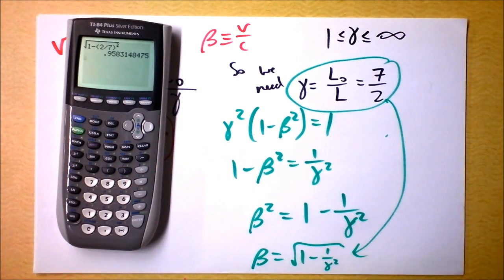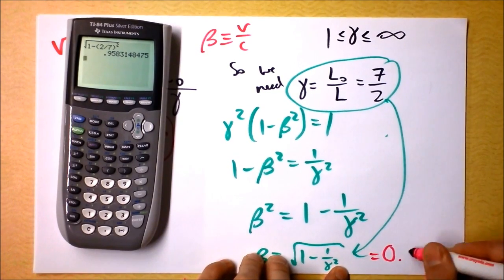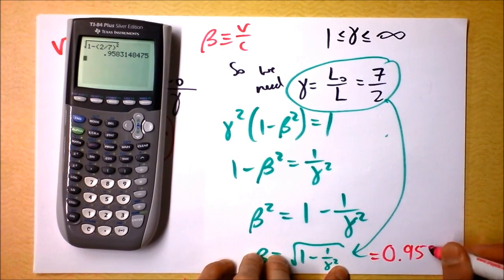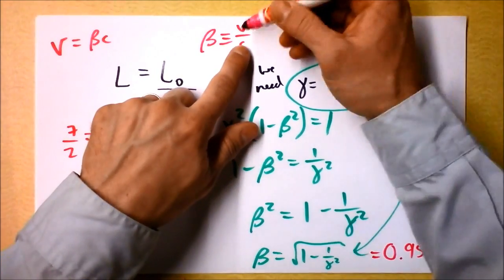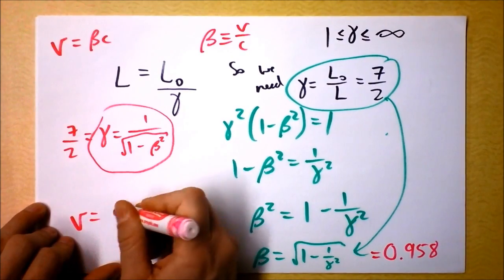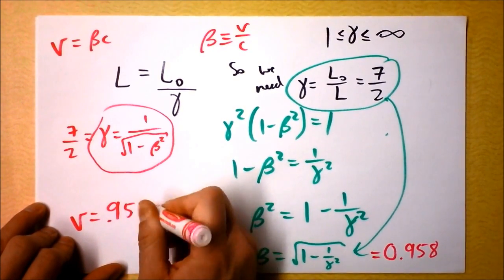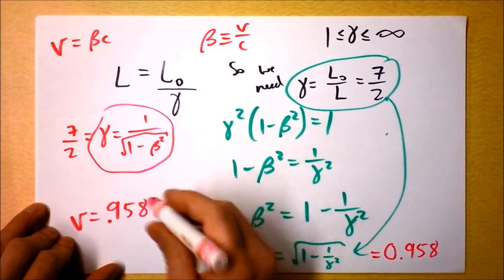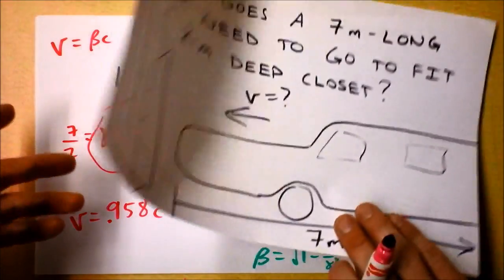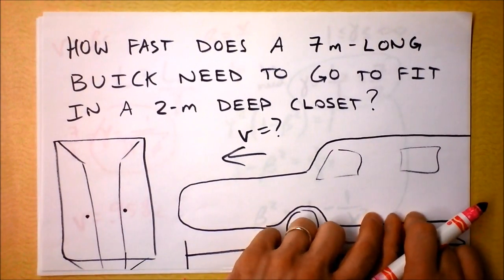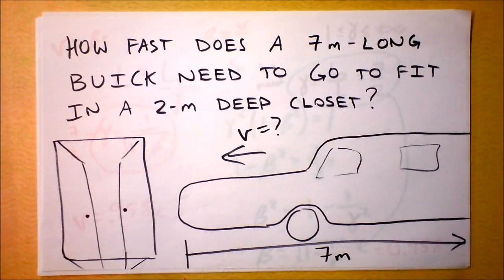And then what do I do, hit enter? So beta's supposed to be 0.958, that means that's the speed divided by the speed of light. So I can say the speed is 0.958 times the speed of light. So if you're going 96% of the speed of light in a Buick, that Buick will fit into a closet that is 2 sevenths as long as the Buick is.